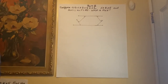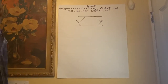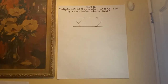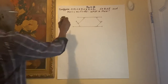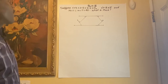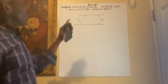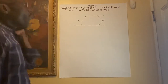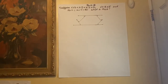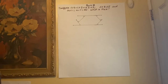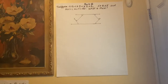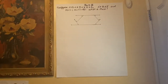Part 3 of Polygon Angle-Sum Theorem. The question is: suppose angle 1 is congruent with angle 2, congruent with angle 4, congruent with angle 6, and measure angle 3 congruent with angle 5, and measure angle 1 equals measure angle 5 plus 60. What is measure angle 6?